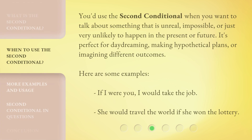You'd use the second conditional when you want to talk about something that is unreal, impossible, or just very unlikely to happen in the present or future. It's perfect for daydreaming, making hypothetical plans, or imagining different outcomes. Here are some examples: 'If I were you, I would take the job.' 'She would travel the world if she won the lottery.'